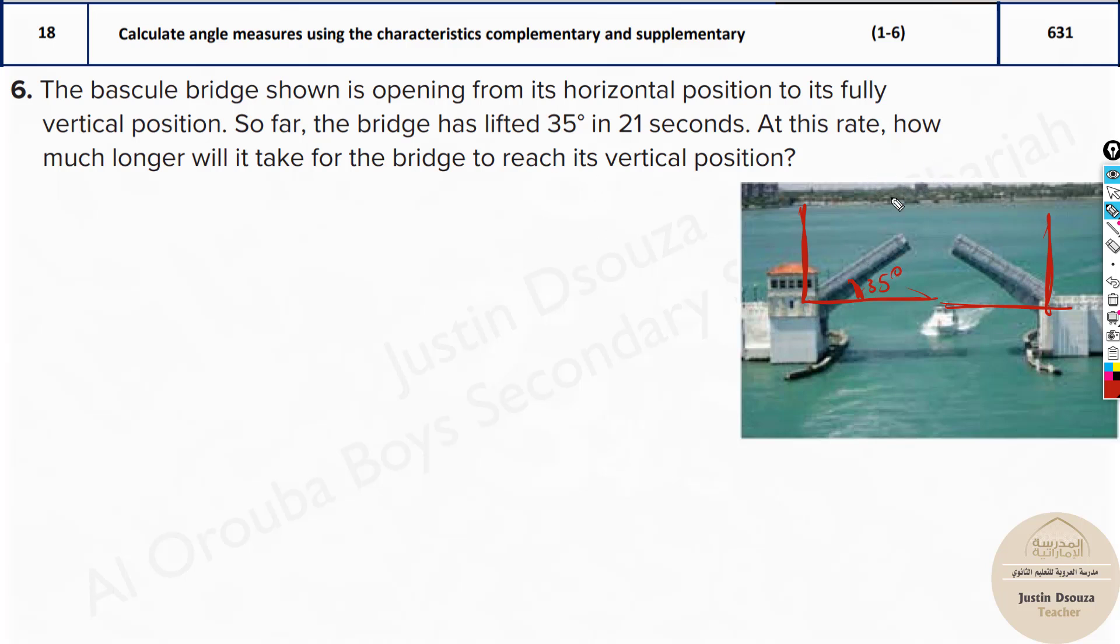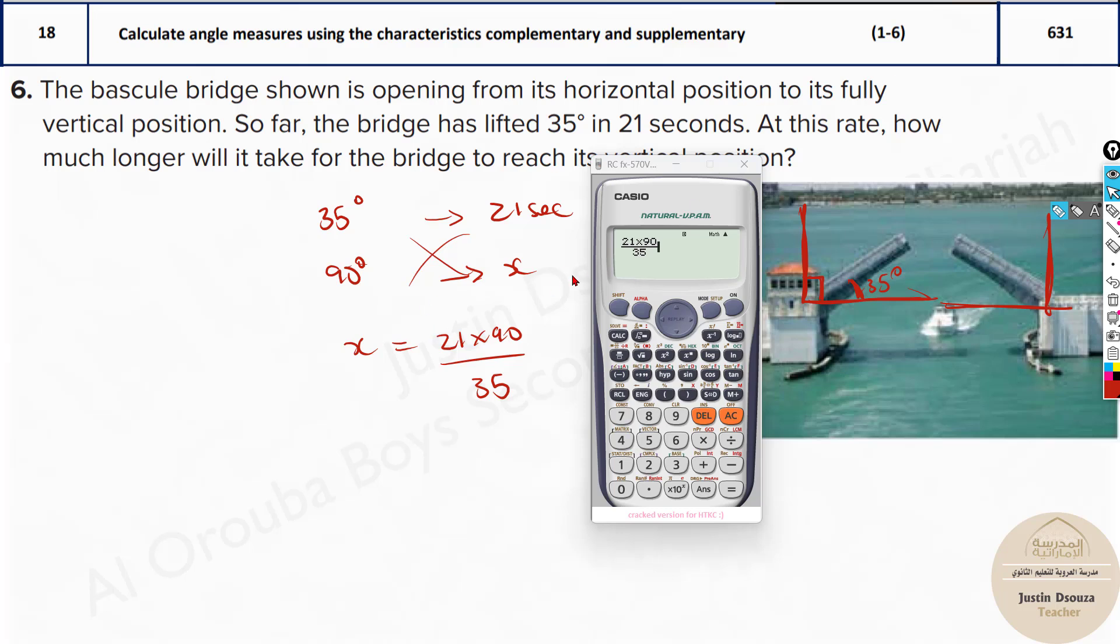At this rate, how much longer will it take for the bridge to reach its vertical position? It's about 90 degrees. Vertical position. So it's like a rate problem. We need to find the seconds, how much time still is remaining. So let's just write this. We know for 35 degrees, it has taken 21 seconds. So for 90 degrees, how many seconds will it take? Just cross multiply here. The x goes to the other side, will equal 21 times 90 by 35. Just put it in the calculator now. So I've just written 21 times 90 by 35. So it'll take 54 seconds.